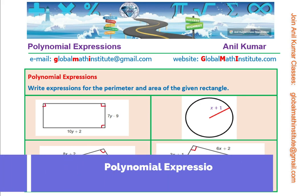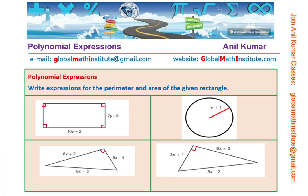Let us understand how do we multiply the polynomials and write equivalent expressions for area and perimeter. We have four examples in this particular video.